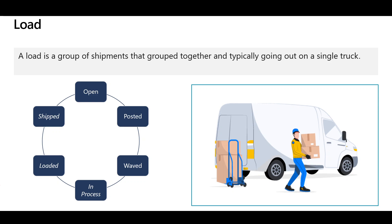The load lifecycle starts with the status 'open' and it could be 'posted' when the release-to-warehouse process is performed, where the shipment and the load are created but not yet assigned to a wave. When the load is part of a wave, the status turns to 'waved' when the wave is processed, and accordingly the picking work will be created. While processing the picking work, the load status will be 'in process,' and when the picking work is closed, the load status will be 'loaded.' Finally, when the outbound shipment is confirmed, the status will be 'shipped.'